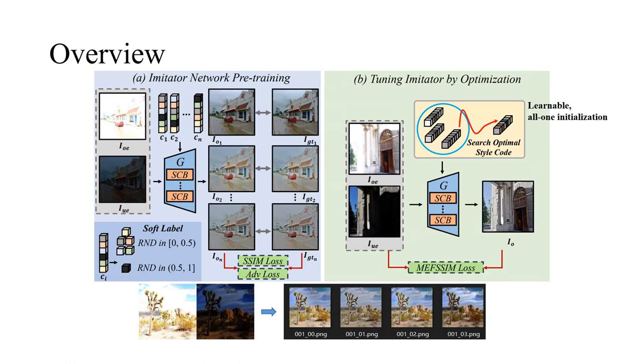First of all, we collect data for stage 1 training. For a pair of overexposed and underexposed images, we use all the MEF target methods in the ensemble to produce their fusion images.